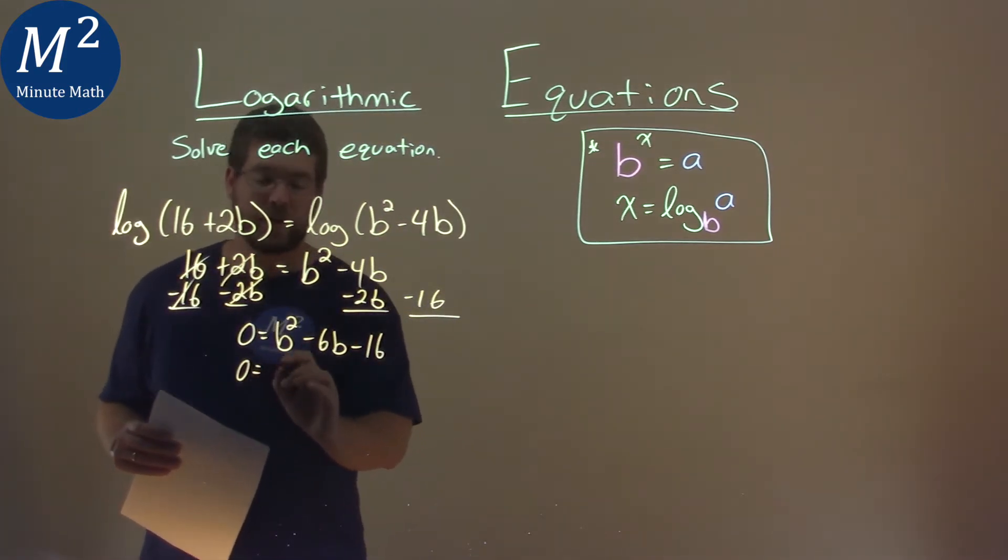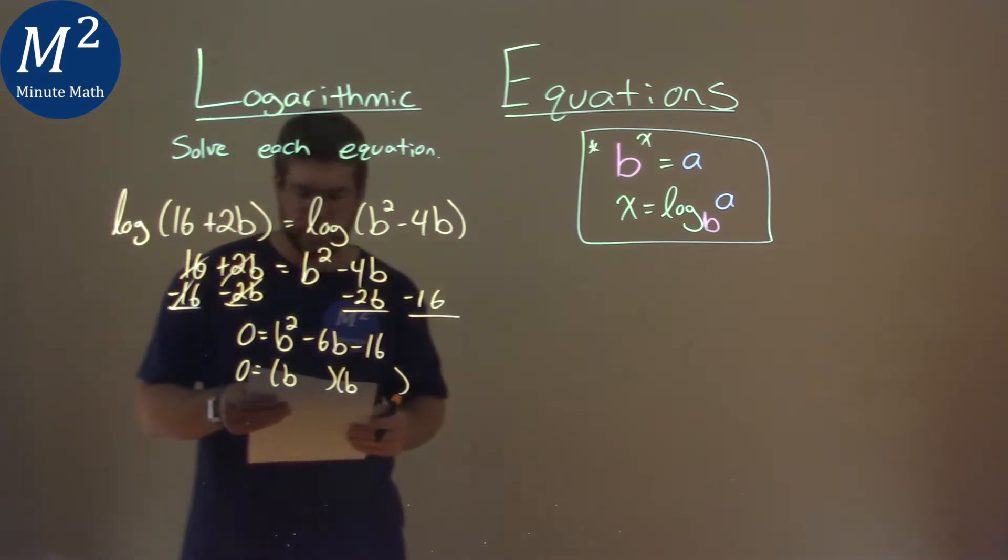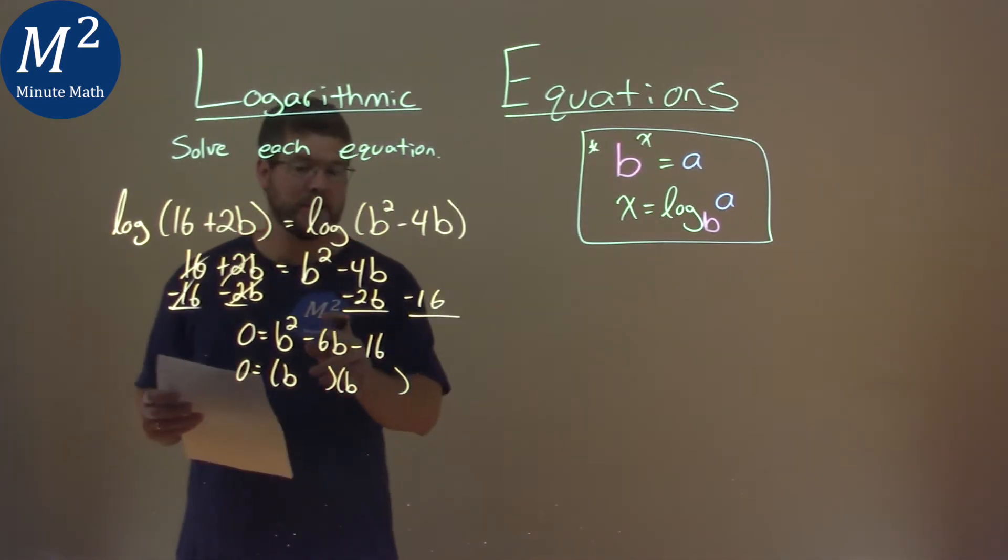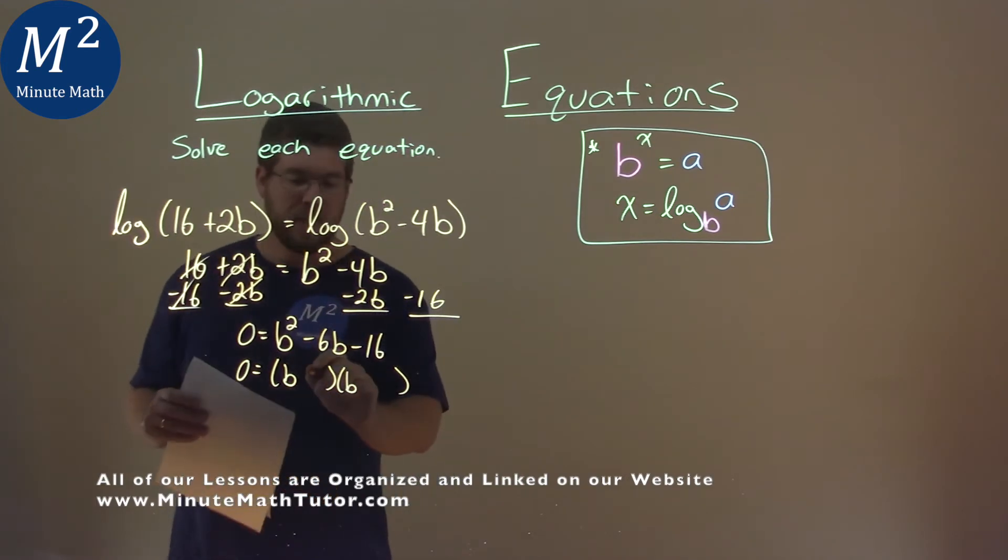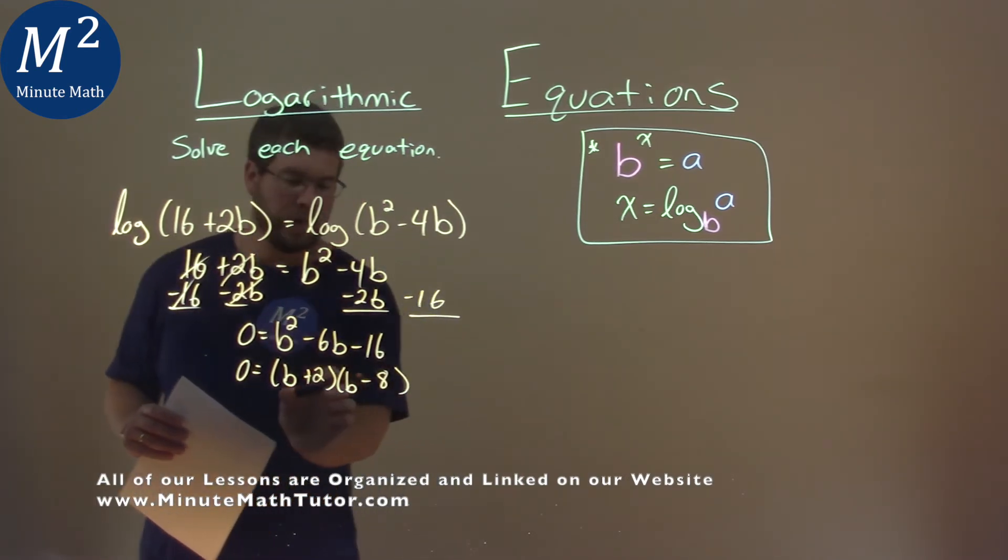Now this can factor, so let's set it up in our form. And once your numbers multiply to be negative 16, but add to be negative 6, and that's positive 2 and negative 8. When we have that,